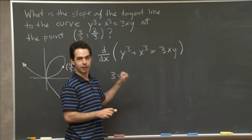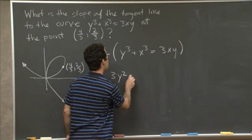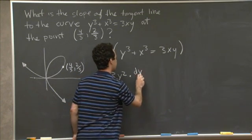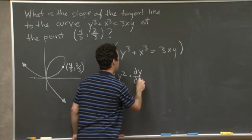But then we need to multiply by, in the chain rule, by the derivative of the inside, which in this context is dy by dx.